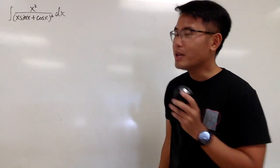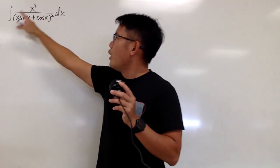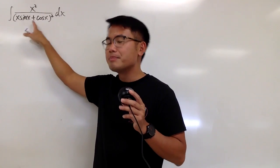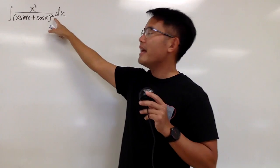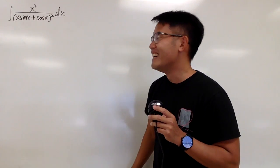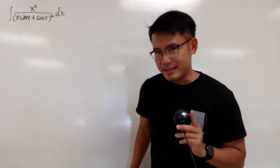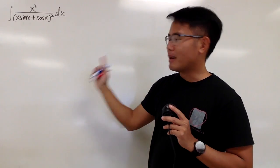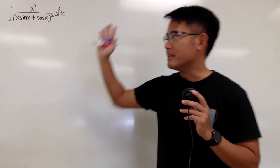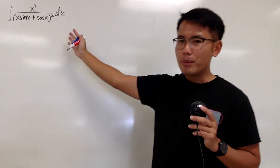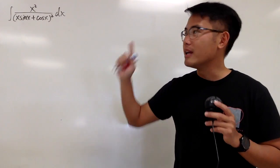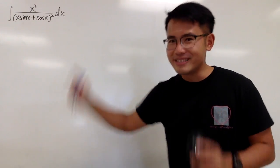Let's do some math for fun. Here we are going to integrate x squared over parentheses x times sin x plus cos x, squared. This seems really impossible, but yes, this is in fact doable. Please pause the video and try this first.